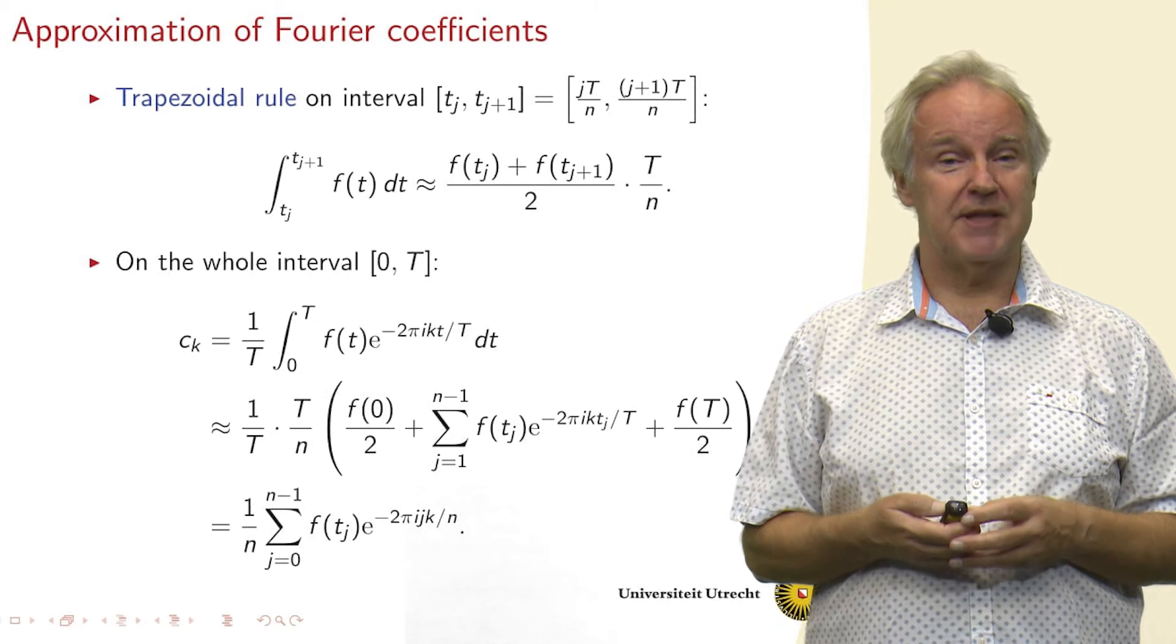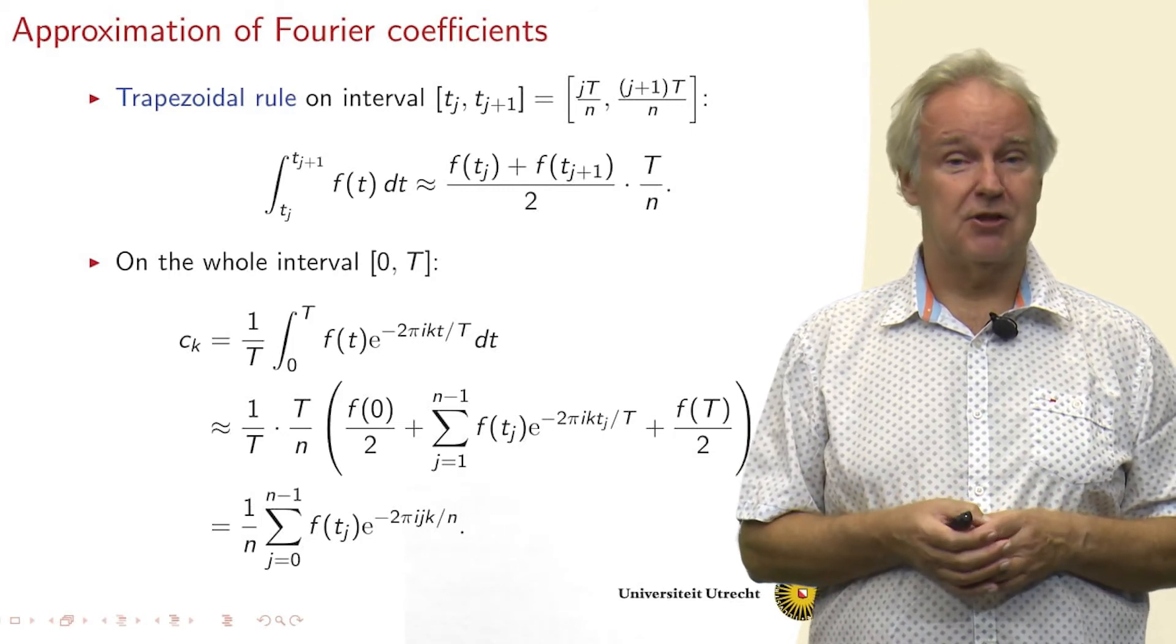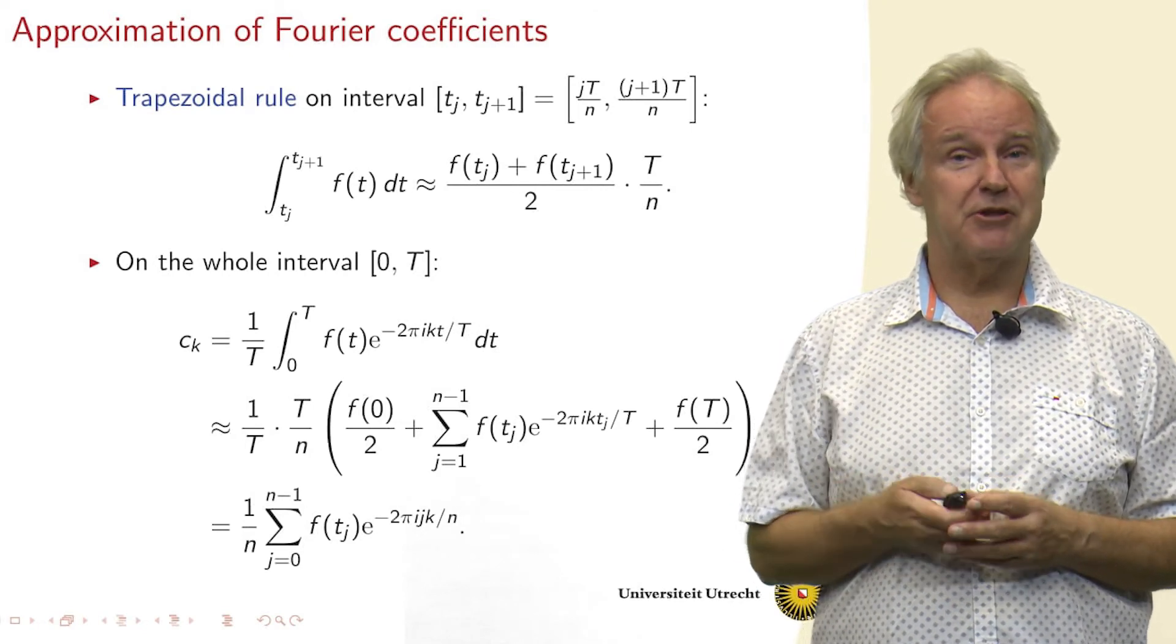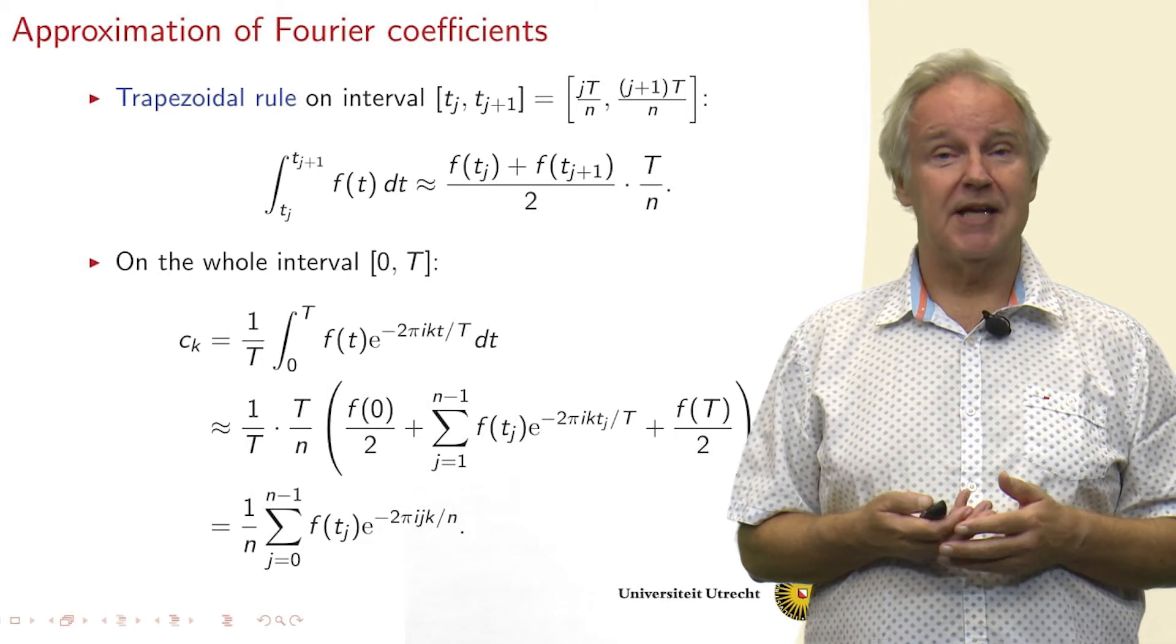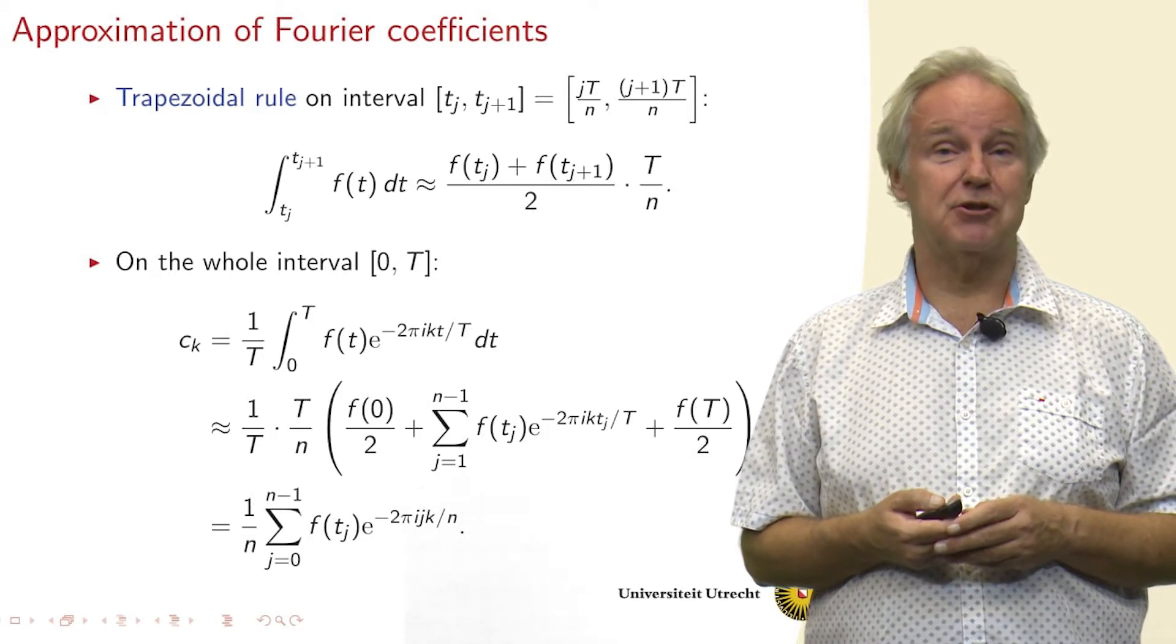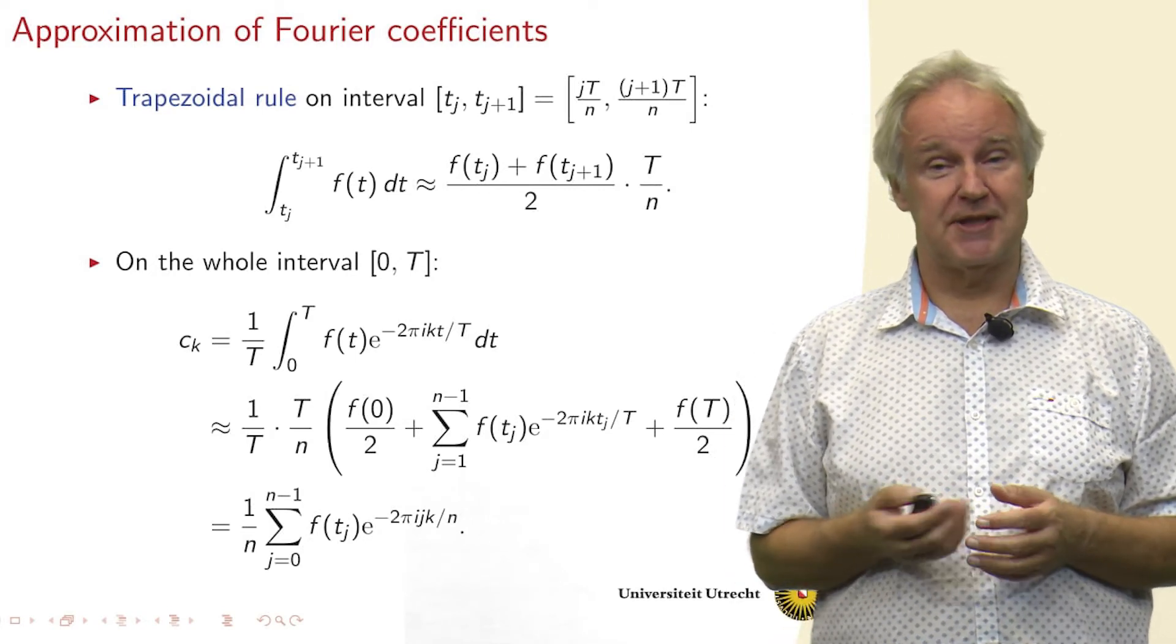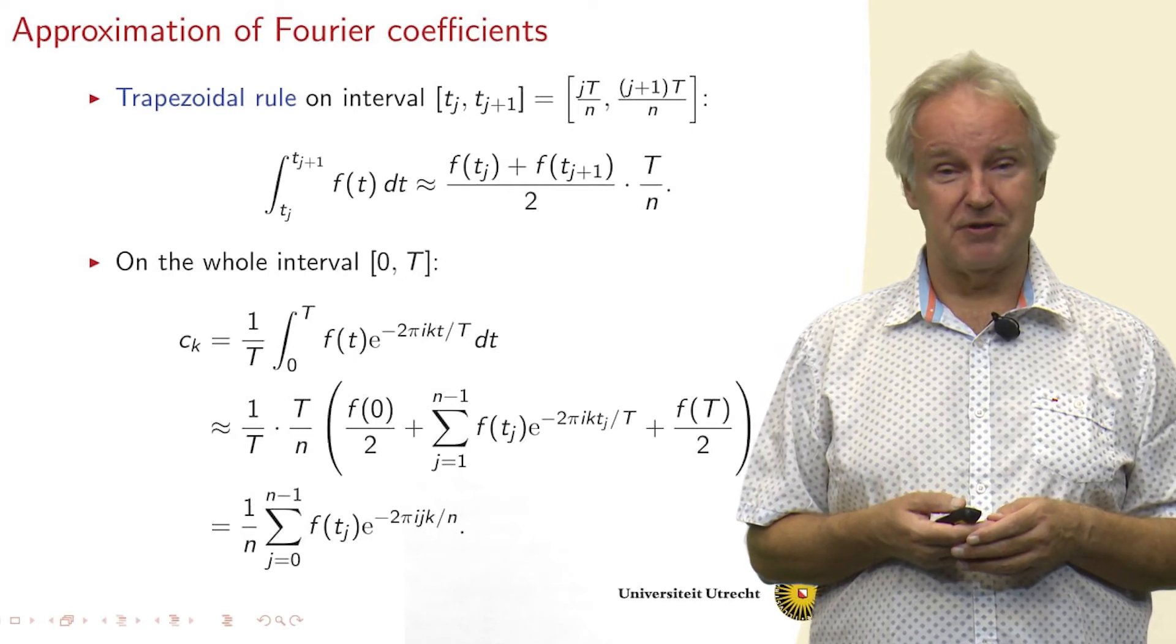And then if we take that approximation, and we do that for the whole interval for a complete period, so cutting it up into n small intervals, then you see we get from the leftmost interval a contribution of f0 divided by 2. From the rightmost interval we get the endpoint f divided by 2. And then from all the intermediate intervals together we get a sum from 1 to n minus 1 of this function sampled in those points tj. We can simplify this because the function is periodic, so f0 and ft are equal.